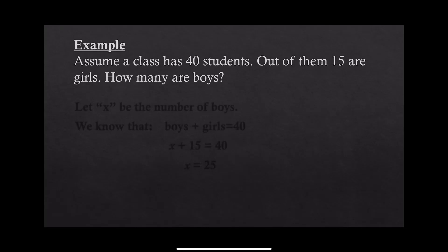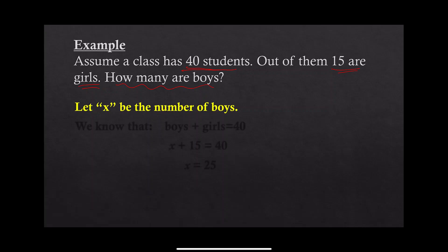Here is an example of how to use the variable x. Assume we have a classroom that has 40 students; out of them, 15 are girls. The question is: how many boys are in this classroom? The first step: let x be the number of boy students, because we don't know the number of boys, so we represent it as the variable x.